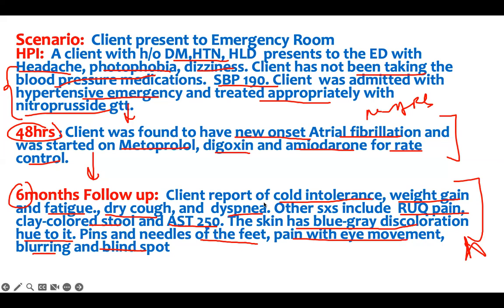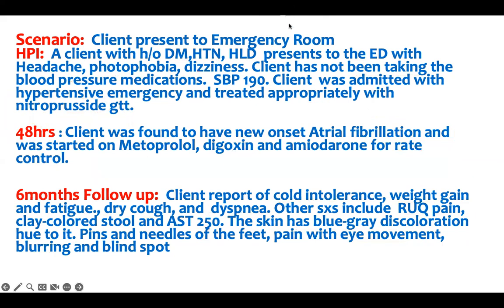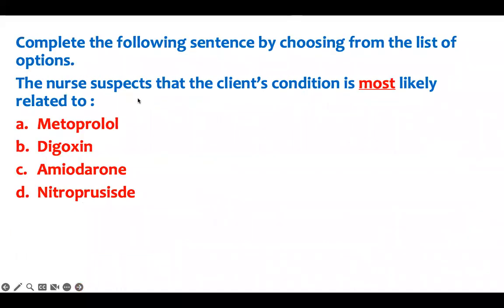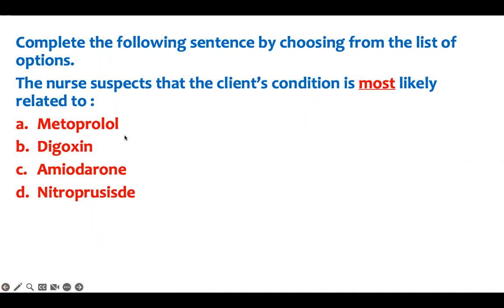You have to be able to recognize cues from these questions. There is key information given to you — I've used something you already know and put it into the scenario. You just have to be patient and read carefully between the lines to figure out what the question is asking. That's where you have to pay attention. Complete the following sentence by choosing from the list of options: the nurse suspected that the client's condition is most likely related to what?